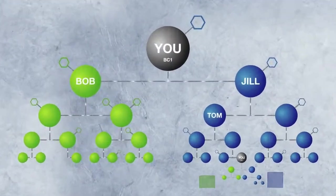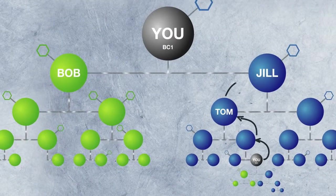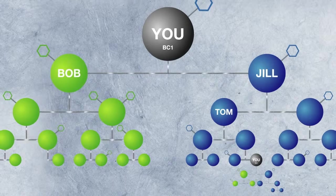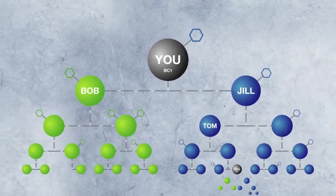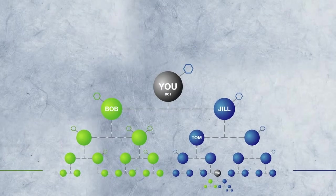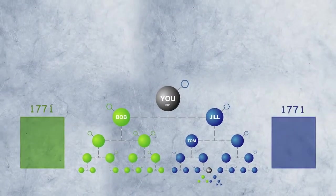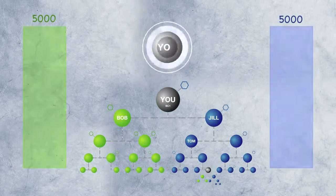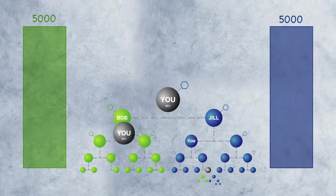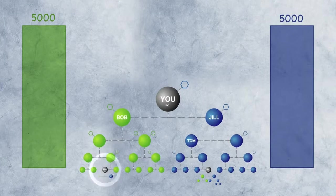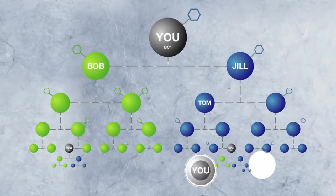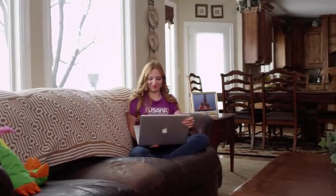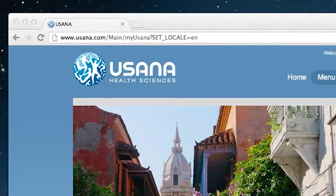When commissions are calculated each week, BC2 and BC1 each earn their own commission. And since BC2 is actually part of BC1, its sales volume flows up to BC1, adding to the volume there. Each business center, including new ones, can earn you up to two more business centers. So the next time BC1 generates 5,000 points on the left and 5,000 on the right, you'll earn your BC3. As you earn more and more business centers, your income potential increases dramatically.